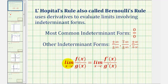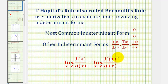L'Hôpital's rule says the limit as x approaches c of f(x) divided by g(x) is equal to the limit as x approaches c of f prime of x divided by g prime of x. So if this limit has one of these indeterminate forms, we can find the derivative of the two functions and then see if we can find the limit in this form.